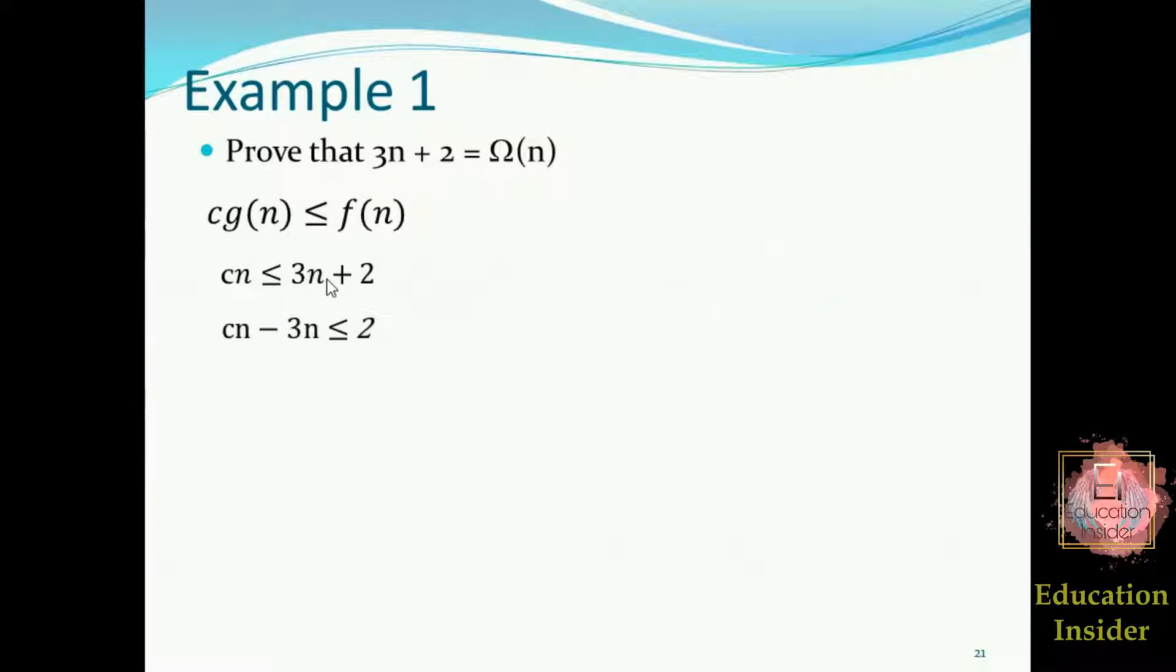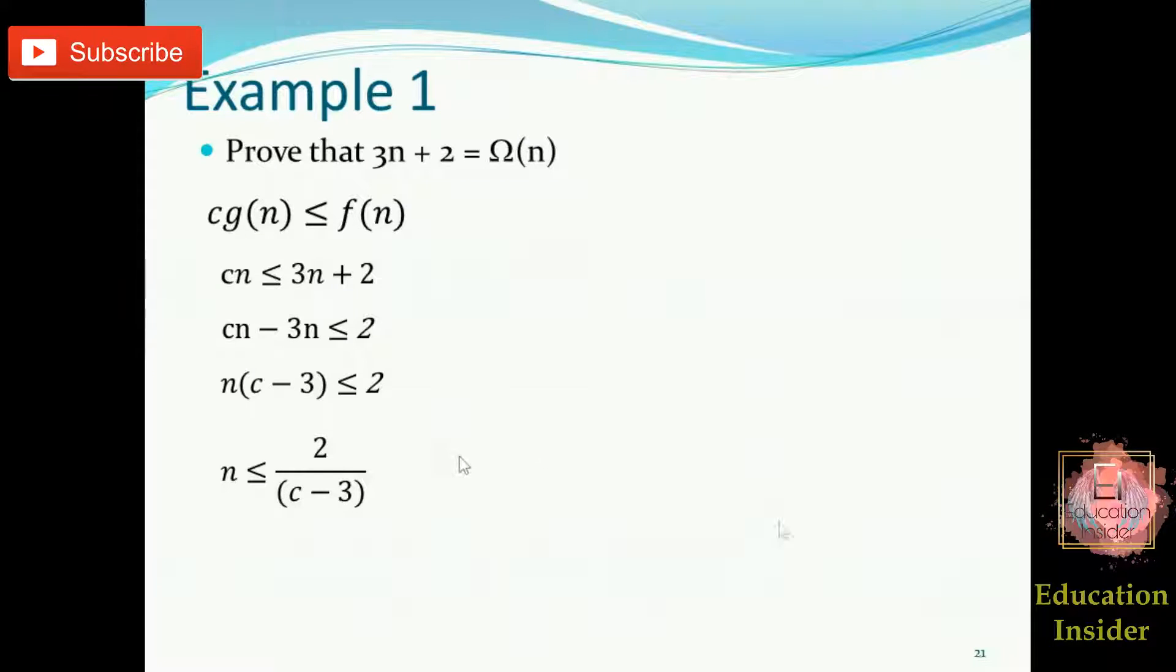I picked this 3n from here and place to this side. Now taking common, we will be getting something like this. And now after dividing c minus 3 on both sides, we will be getting n as this. Now what should be the value of c?